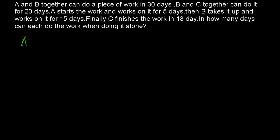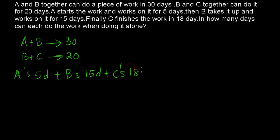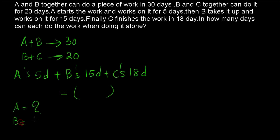So here, what is given? A and B together can do a piece of work in 30 days, and B and C together can do the same work in 20 days. A is working for 5 days, B is working for 15 days, and C is completing the work in 18 days. We have to find out: if A is working alone how much time will be taken, when B is working alone how much time will be taken, and when C is working alone how much time will be taken.